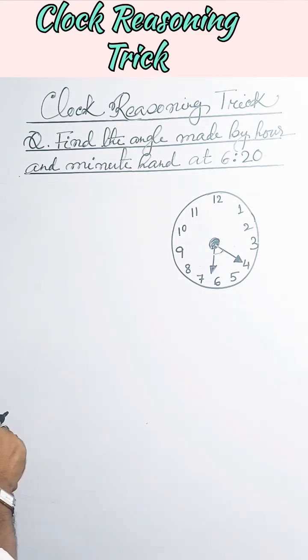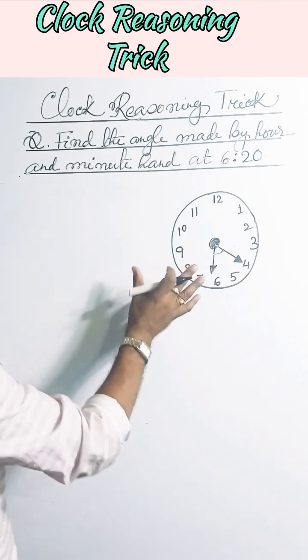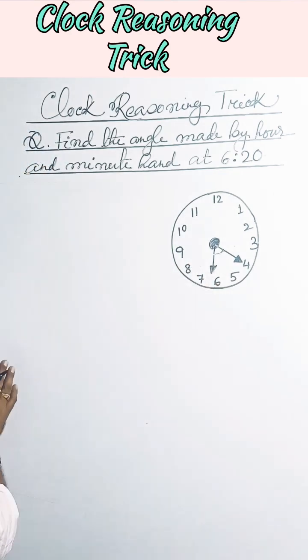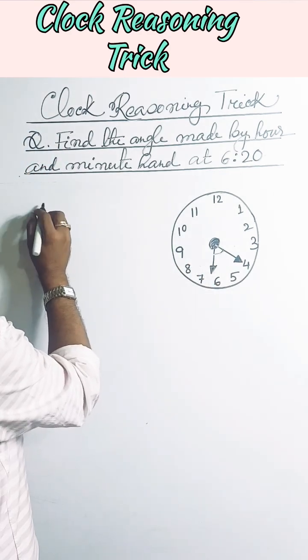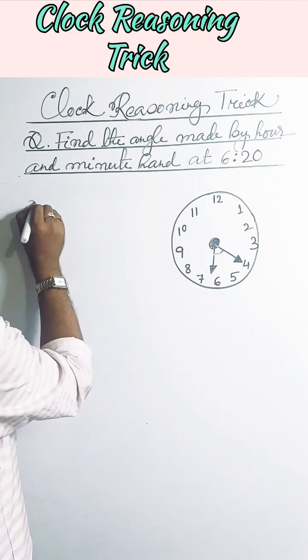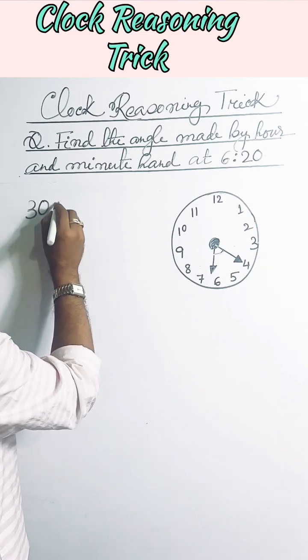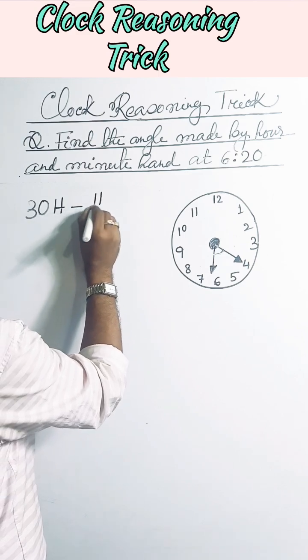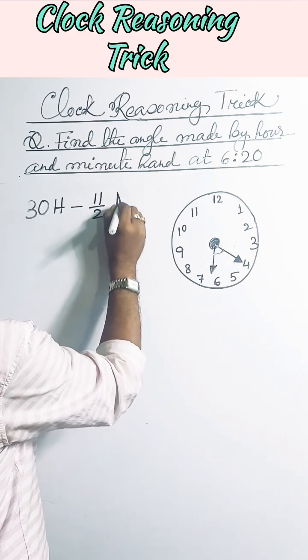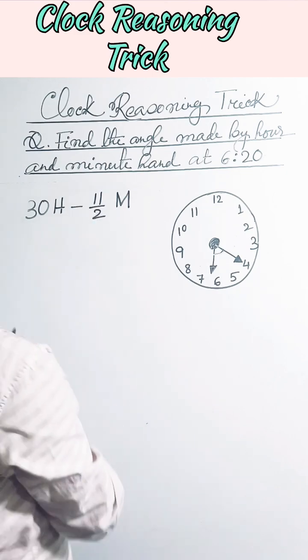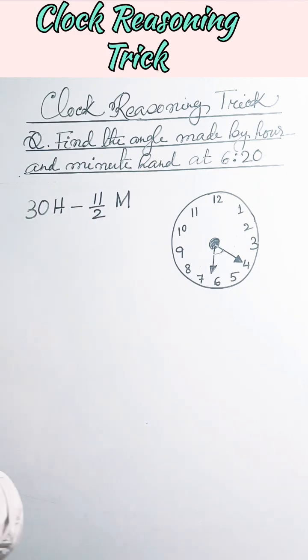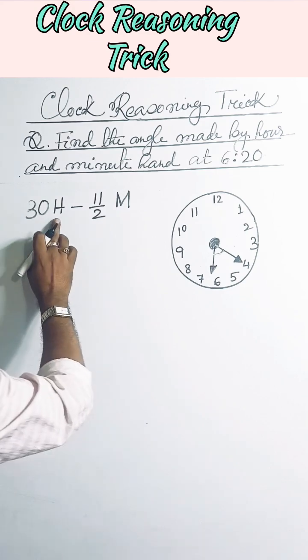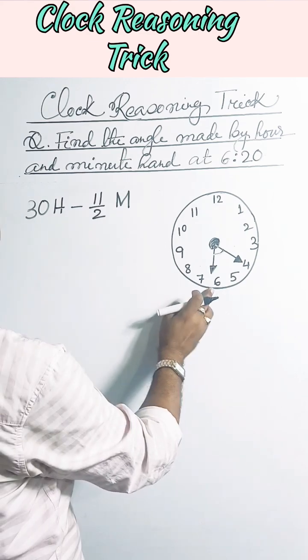This formula is made specifically for this type of problem. The formula is: 30H - (11/2)M, where H is for hour and M is for minute. This is the formula you have to remember. Now here, hour is given as 6 and the minute is given as 20.